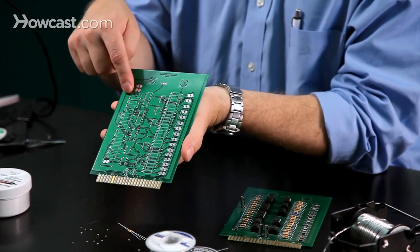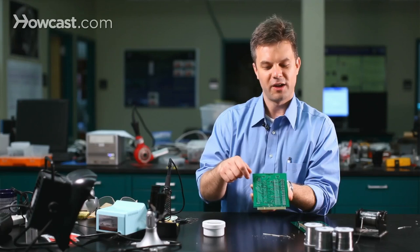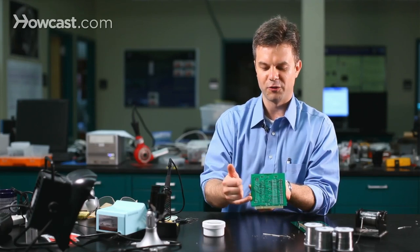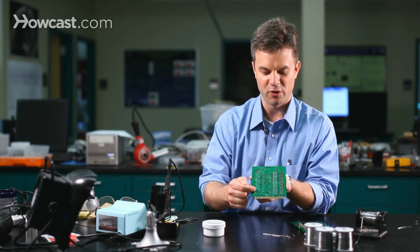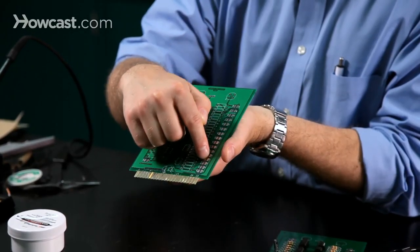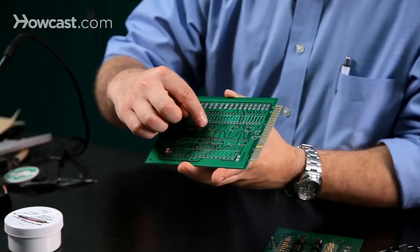This white layer is known as silkscreen and is useful for assemblers to know where to put the different components. In this case, we have the labels for resistors with the letter R, labels for capacitors with the letter C, and labels for the active circuits with the letter U.